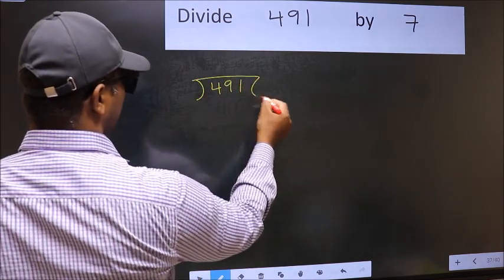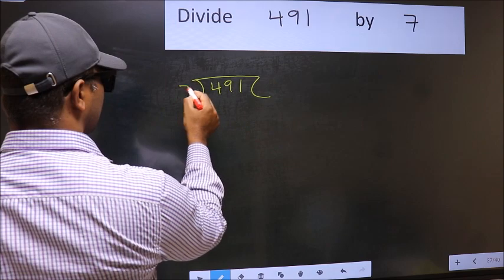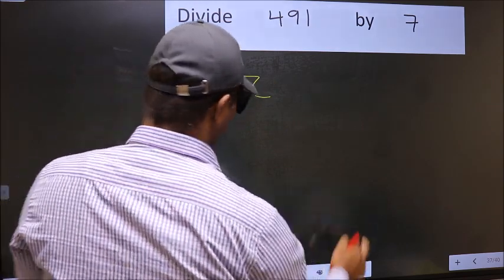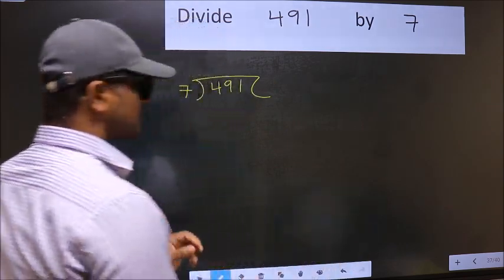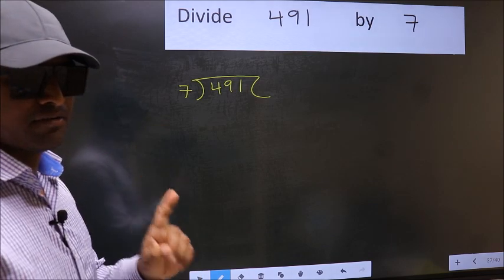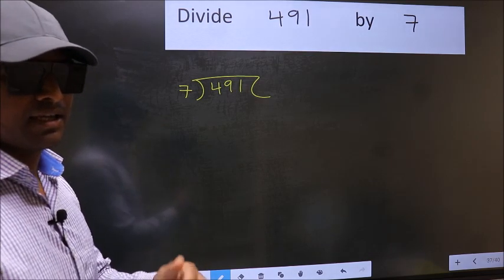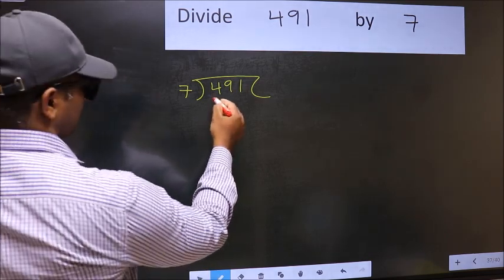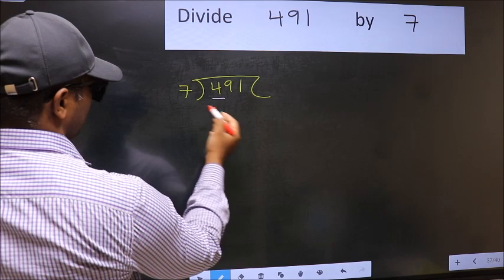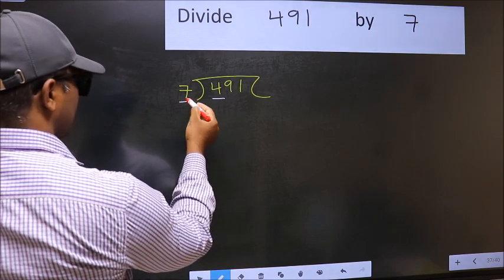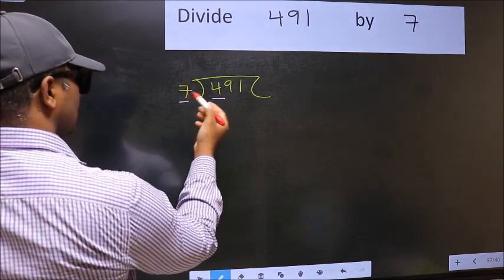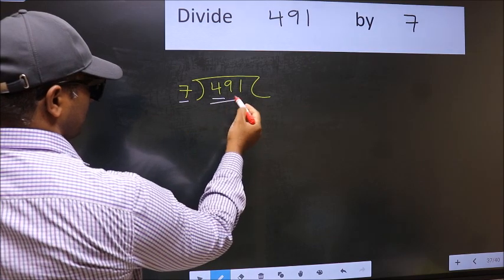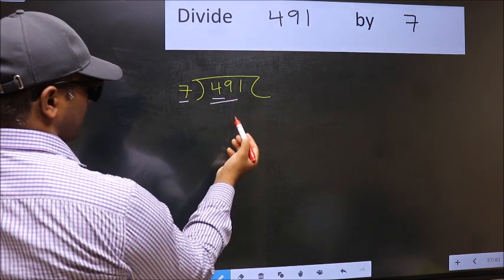491 and 7 here. This is your step 1. Here we have 4 and here 7. 4 is smaller than 7, so we should take two numbers: 49.